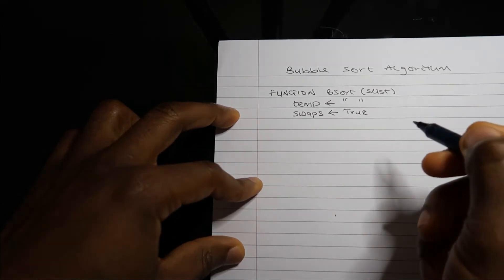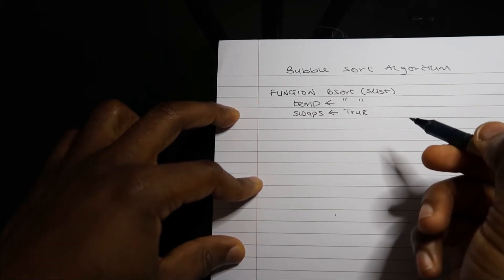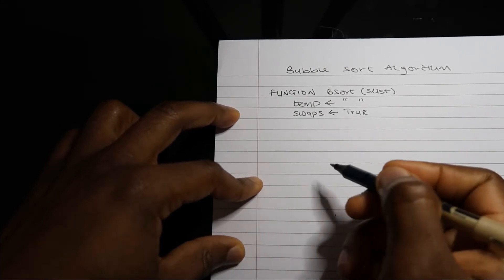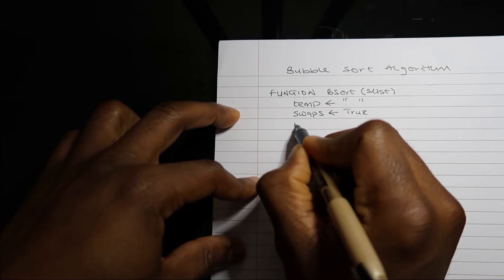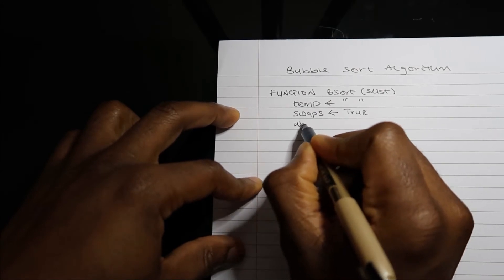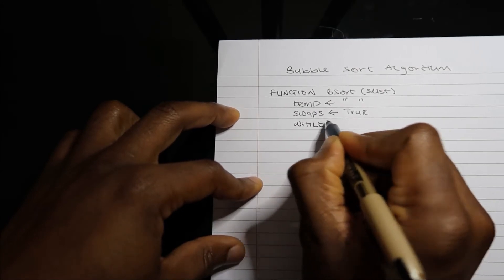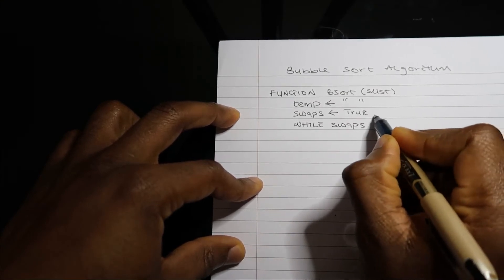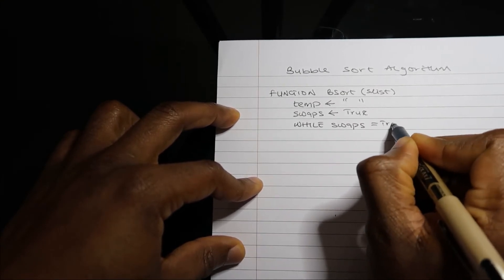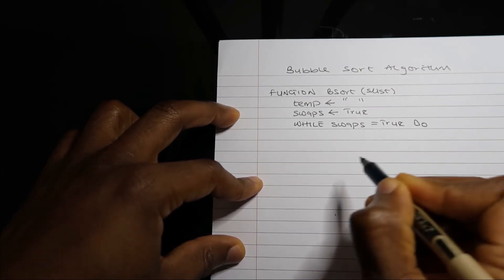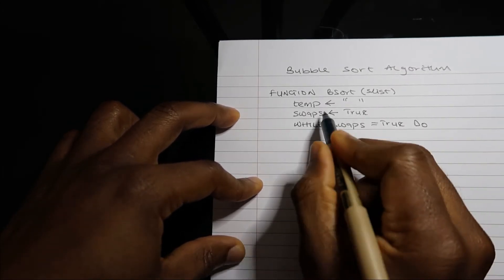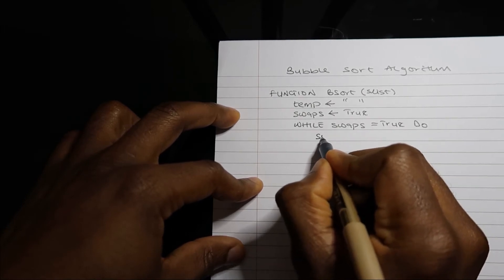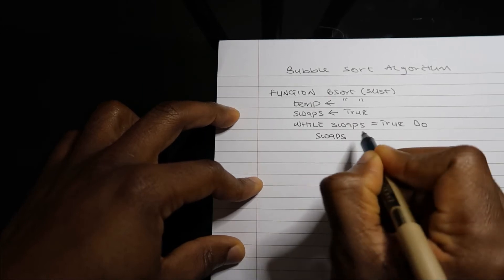So I'm going on the assumption that swaps is true. Using iteration, I will check that while swaps is equal to true, do the following. Now we're going to set swaps to false.